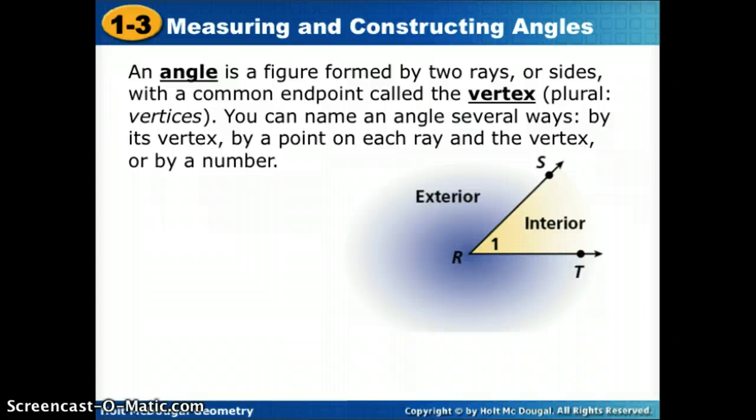An angle is formed by two rays. In this picture you'll see two separate rays, RS and ray RT. An angle is those two rays starting at the same endpoint. When it's an angle we call that a vertex.